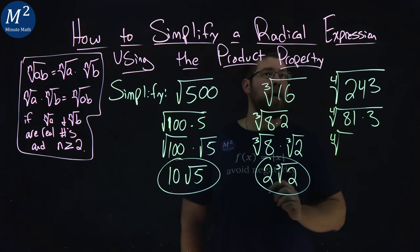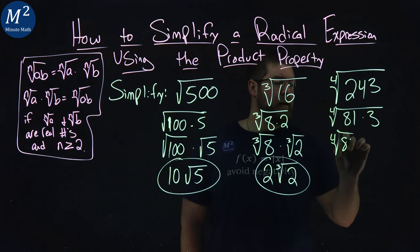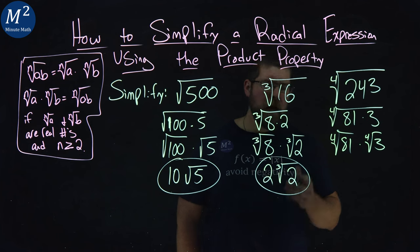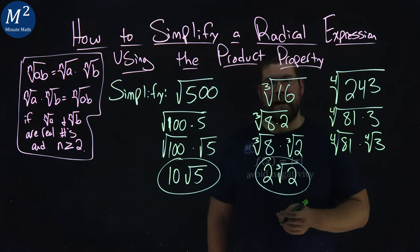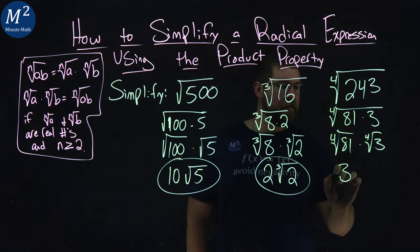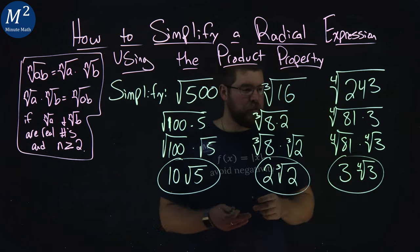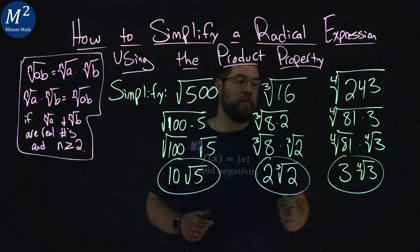We can break this up using the product property, and we have the fourth root of 81 times the fourth root of 3. Now, the fourth root of 81 comes out to be 3, and then the fourth root of 3 is just itself. And so the fourth root of 243 simplifies to be 3 times the fourth root of 3.